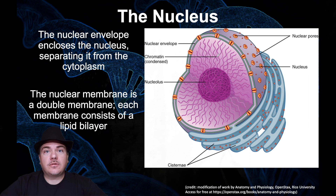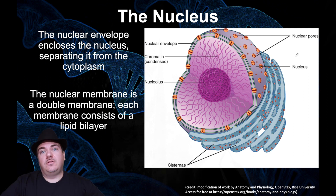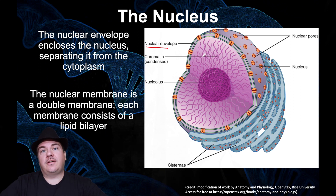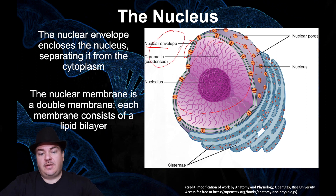This figure is showing a cutaway of a nucleus so you can see what's inside. The nucleus is an organelle, which means it's a membrane-bound compartment inside the cell. The membrane around it is called the nuclear envelope, and the nuclear envelope is actually a double phospholipid bilayer. This nuclear envelope is what separates the nucleus from the cytoplasm — the fluid inside the cell.